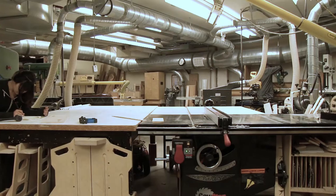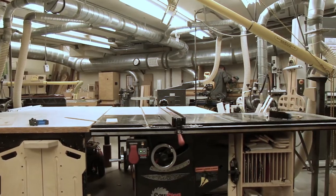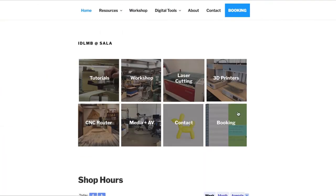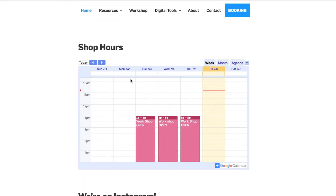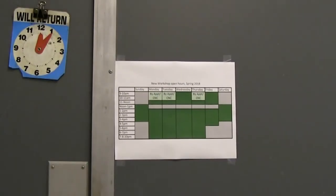The Sala table saw is located in the basement of Le Serre. It is available whenever the wood shop is fully open. Shop hours can be found on the Sala Making and Building website or posted on the workshop door.